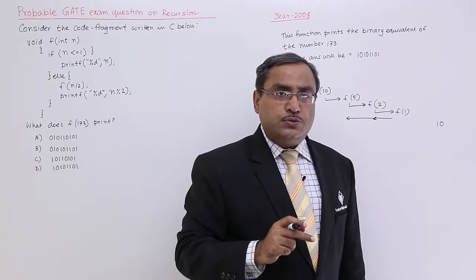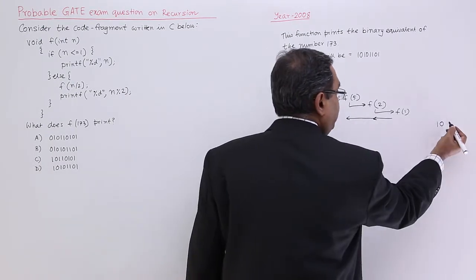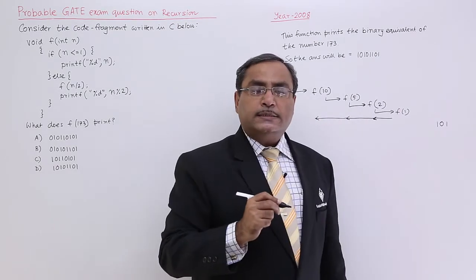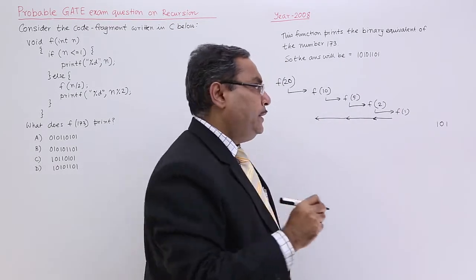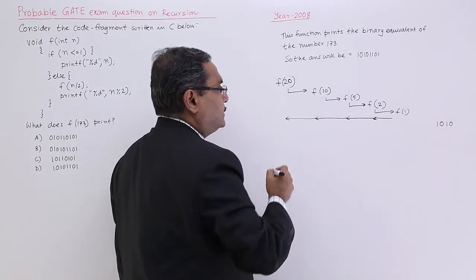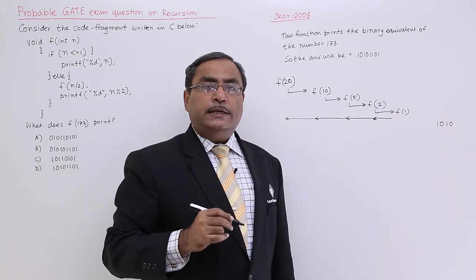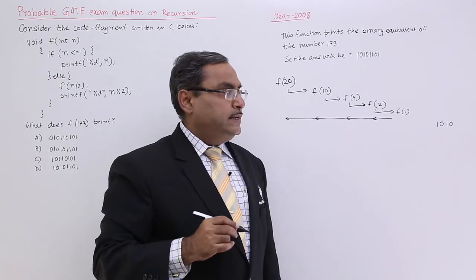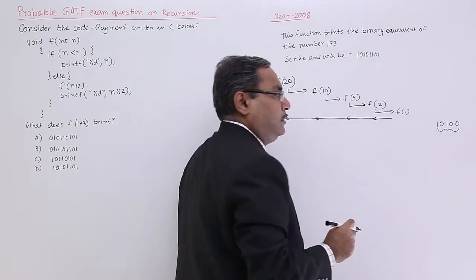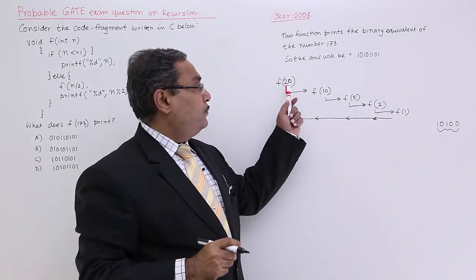5 percentage 2 means 1 will get printed. Control will come down to this so 10 percentage 2 means 0 will get printed. Control will come down to this 20 percentage 2 means 0 will be printed. What are you getting? You are getting the binary equivalent of 20.